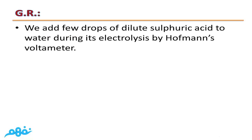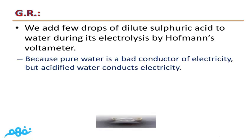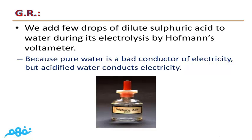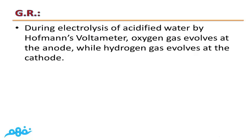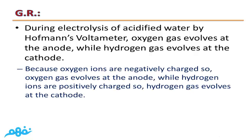Give reason: We add a few drops of dilute sulfuric acid (H₂SO₄) to water during its electrolysis by Hoffman's voltmeter. This is because pure water is a bad conductor of electricity, but acidified water conducts electricity. Give reason: During electrolysis of acidified water, oxygen gas evolves at the anode because oxygen ions are negatively charged, while hydrogen gas evolves at the cathode because hydrogen ions are positively charged.